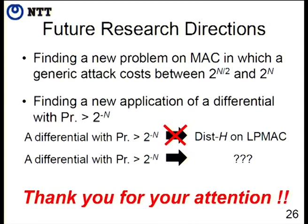Another future direction is finding new applications of a differential with probability higher than 2^(-N). Previously, it was believed that as soon as a differential with probability slightly better than 2^(-N) is found, it can be converted to a distinguishing attack on a MAC construction. But in this paper, we showed that this conversion does not work — the distinguishing-H attack converted in such a way is worse than the generic attack. Finding a new application for such differentials is an interesting open problem. Thank you for your attention.